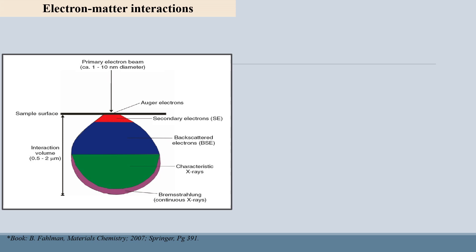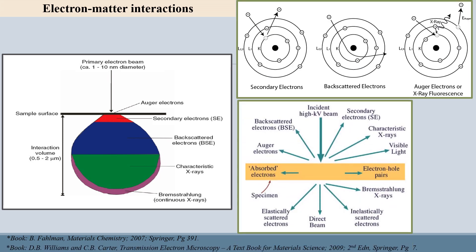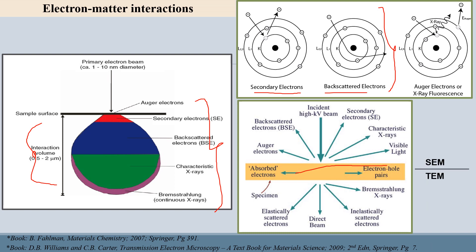When the primary electron beam reaches the sample, it interacts within different interaction volumes and generates different signals. Secondary electrons and backscattered electrons are used in scanning electron microscopy. Signals collected from the top of the sample are related to SEM, while transmitted electrons and other signals from transmission are used as the basis of TEM.